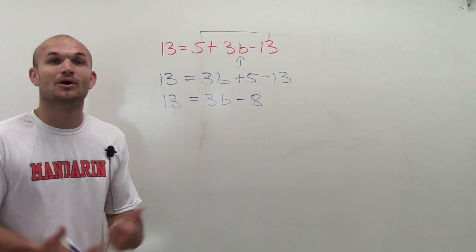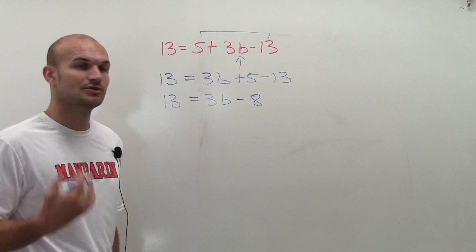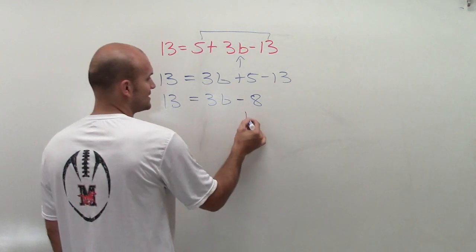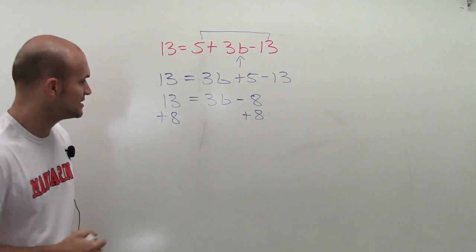Well, two-step equations we've been working on over and over again. From here, we just need to undo addition and subtraction. Undo subtracting an 8. So I'm going to add an 8, because that's the inverse operation, by using addition property of equality.